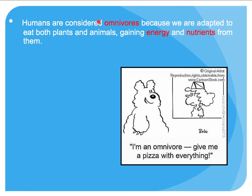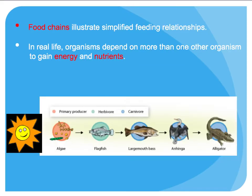There are quite a few omnivore species on the planet, including humans. Now that we know these basic terms, we can get into feeding relationships more specifically. Food chains are one tool used to illustrate feeding relationships — showing a linear, step-by-step transfer of energy from one source to another. All of this begins with the sun, which provides energy to the producer, in this case algae. Algae provides energy to the herbivore (a flagfish), which provides energy to the bass, then to the bird, and to the alligator.